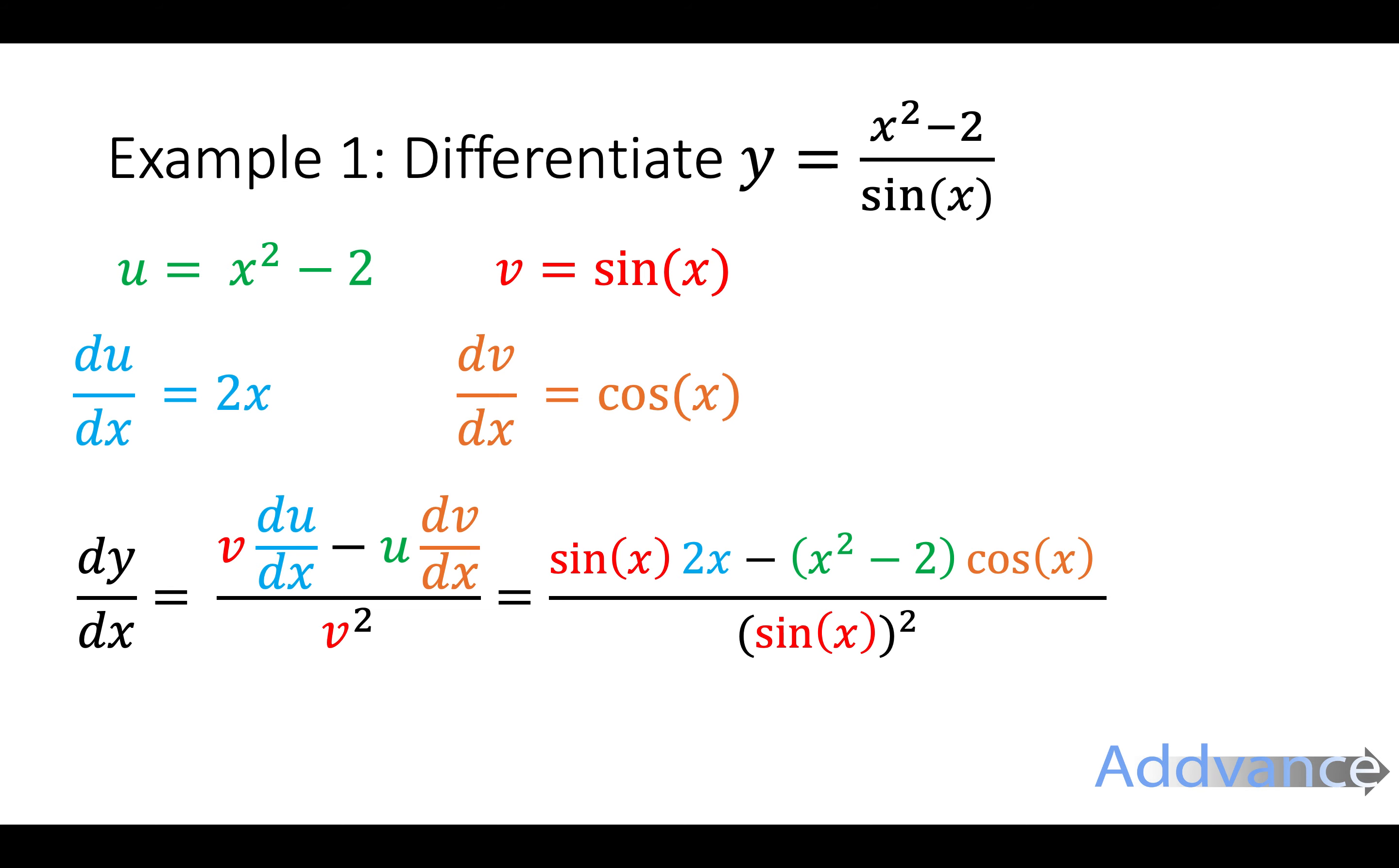Now we're going to simplify a little bit like that. Remember sine of x squared can be written as sine squared of x. And that's the final answer. You should always simplify this if you can but this one can't really simplify properly.